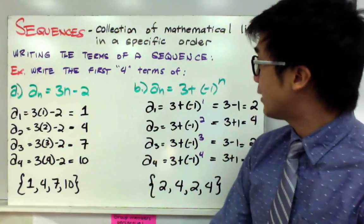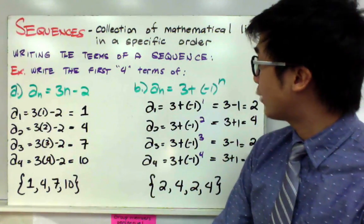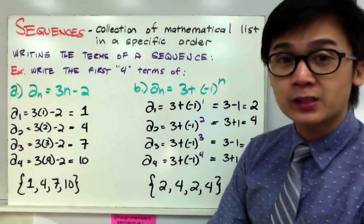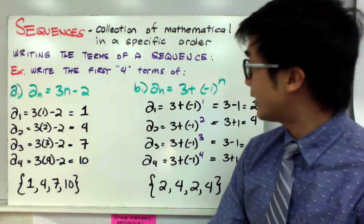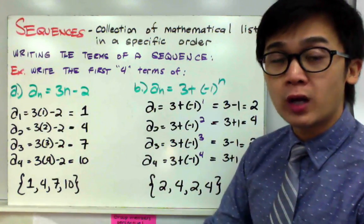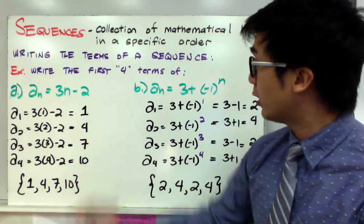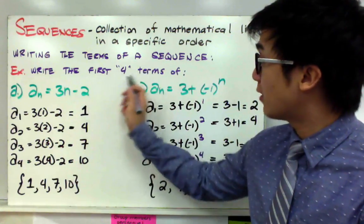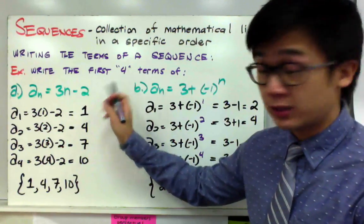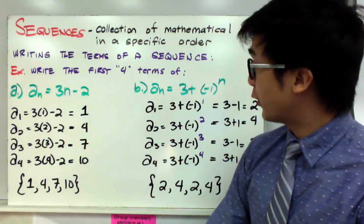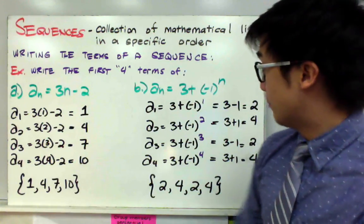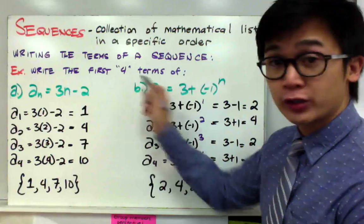For letter B, the sequence is given by a sub n equal to 3 plus negative 1 raised to n, where n is the exponent. To evaluate the sequence, just like in letter A, replace n by 1, 2, 3, and 4 because we are required to write the first four terms. Even if required to write 238 terms, you'd find all terms by substitution — but for now, let's find the first four.